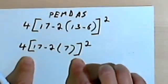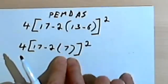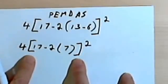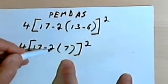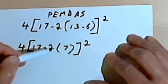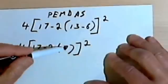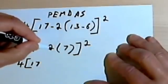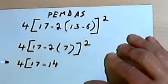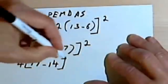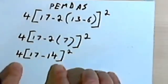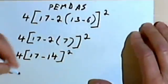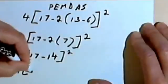This whole thing in the square brackets is going to be squared. Now I've got the parentheses with 7, but I can't do anything with the 7 alone, so I see what's next. Inside the square brackets I've got subtraction, but I've also got multiplication. Multiplication comes before subtraction, so I have to multiply the 2 times the 7. So I'll have 4 times [17 minus 14] squared. And 17 minus 14 gives me 4 times 3, squared.